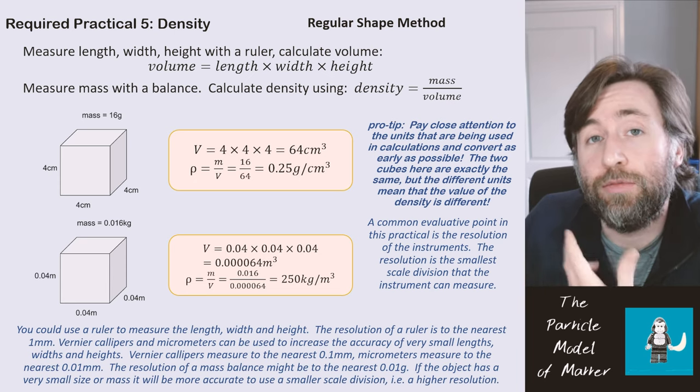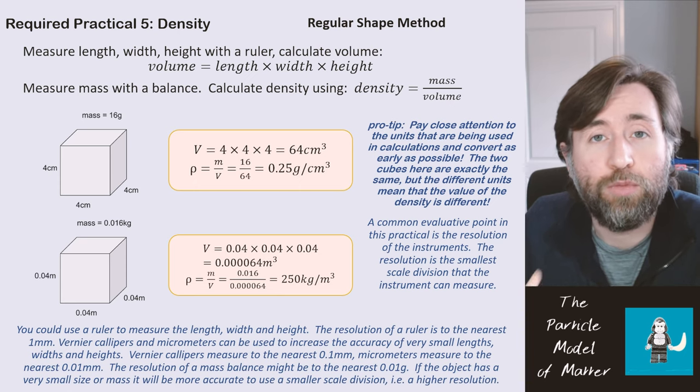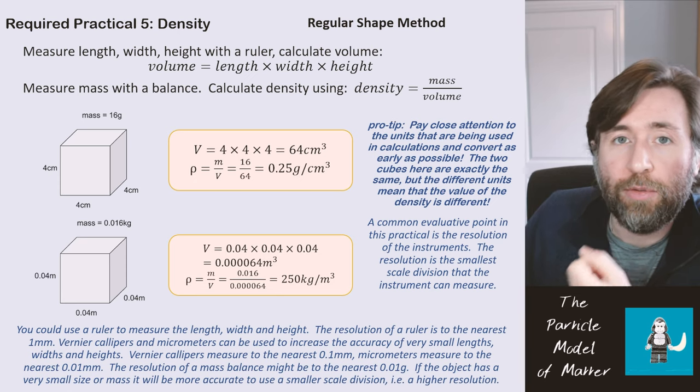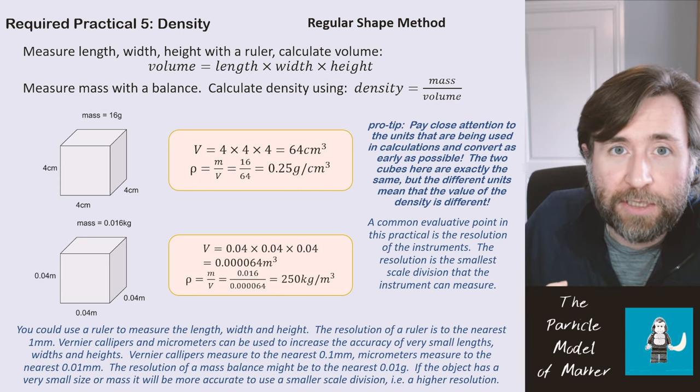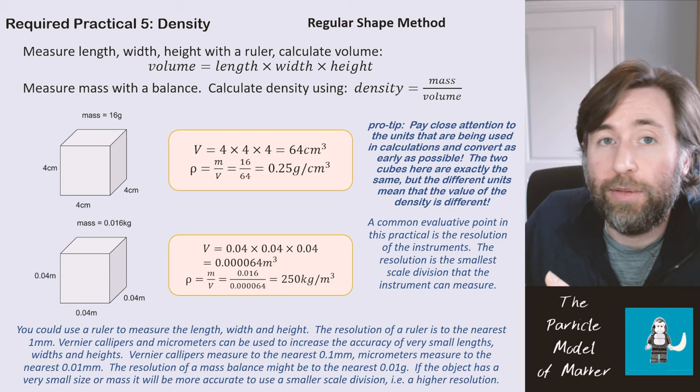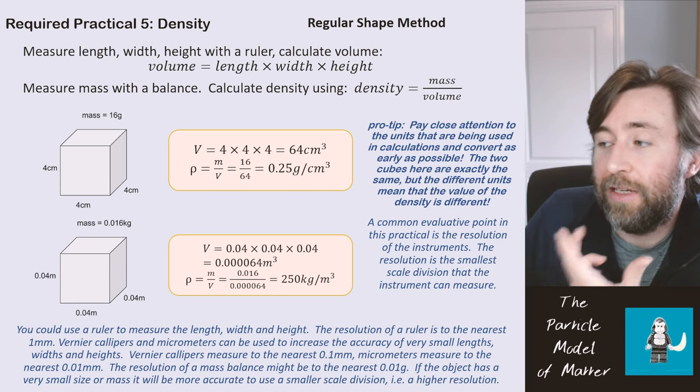So you could and you probably would use a ruler to measure the length, width, and height. Now the resolution of a ruler is one millimeter. If you needed to go to a higher resolution than that, if you wanted to be more accurate, because let's say your cube was only a couple of centimeters, then you perhaps want to use something called a vernier caliper, or even a micrometer. And they have higher resolutions, and that can increase your accuracy.